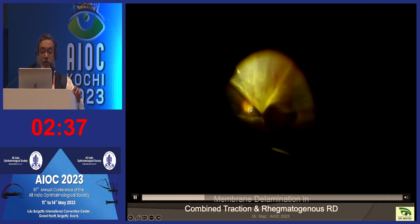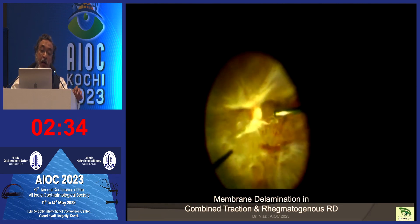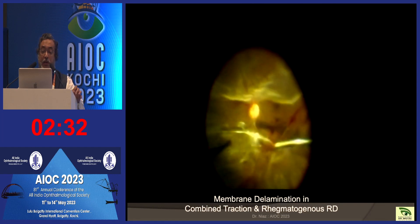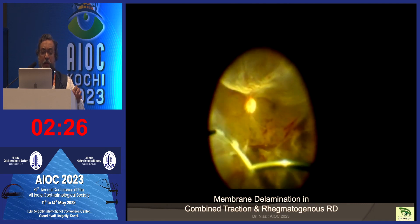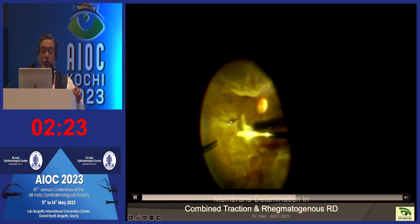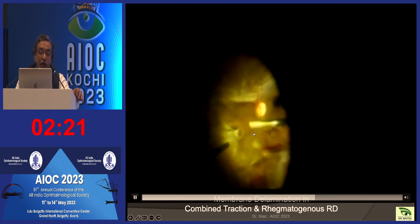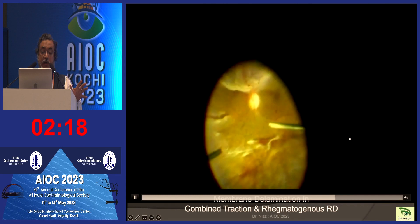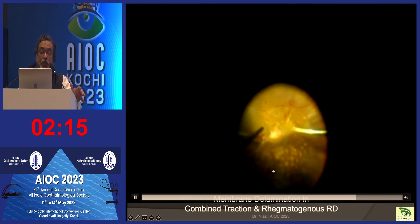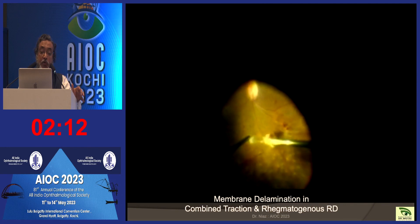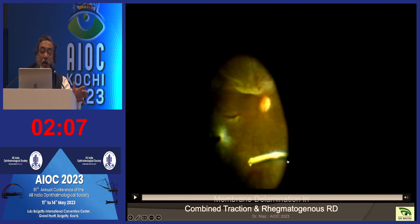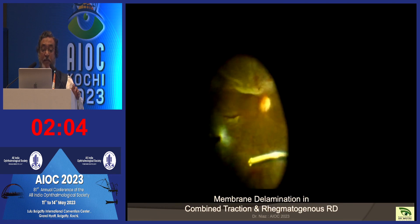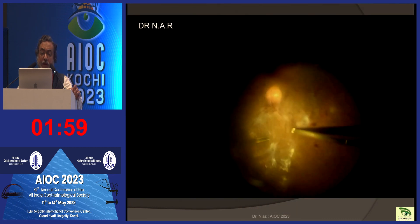Sometimes we encounter a combined detachment where traction causes a tear, giving both a rhegmatogenous and a tractional component. In these cases we must remove the entire posterior hyaloid and vitreous very gently, as the underlying retina can be very fragile and further tears can result. We must be especially careful not to create macular tears. After removing all traction and fibrovascular elements, a straightforward air-fluid exchange, laser, and tamponade can settle the retina.